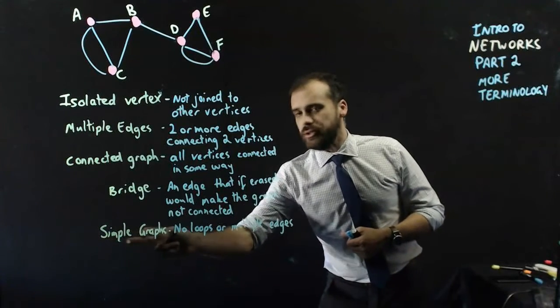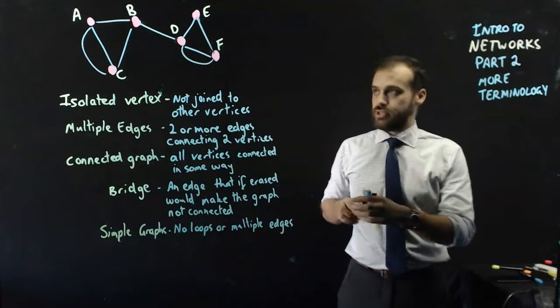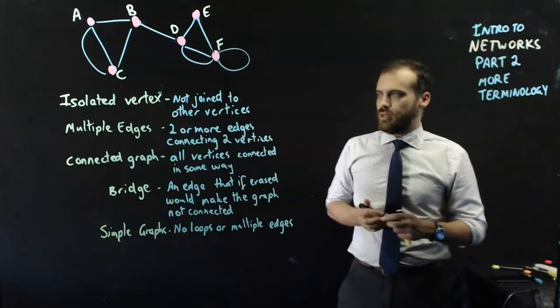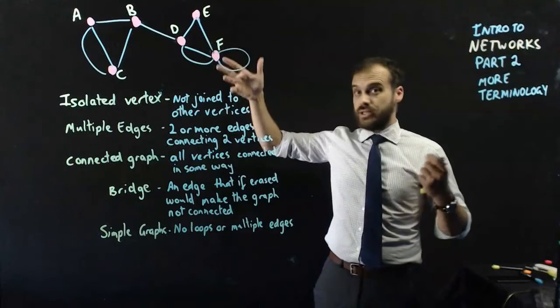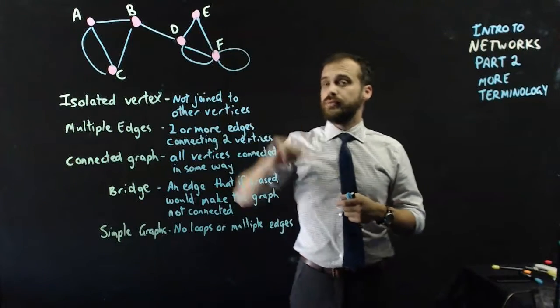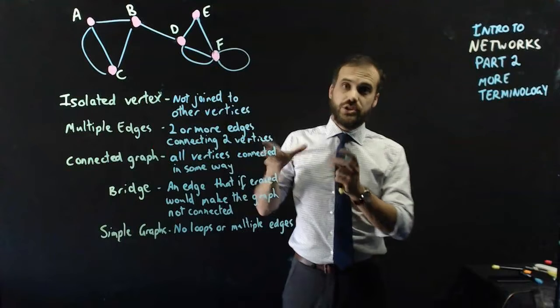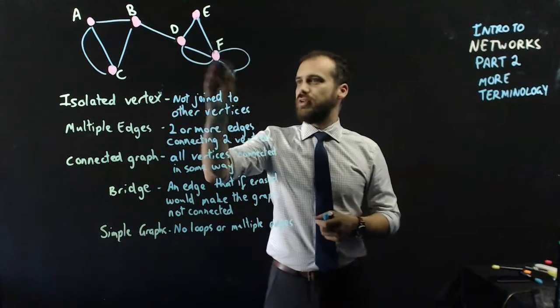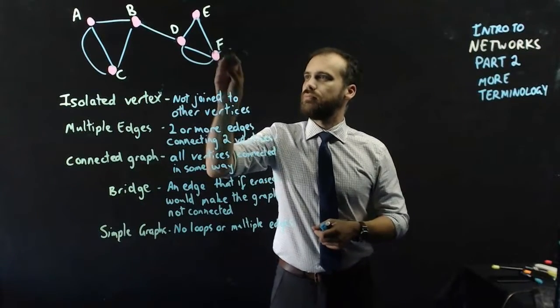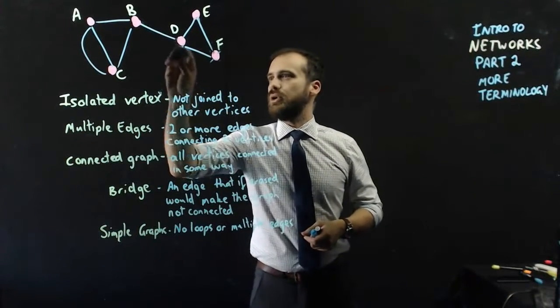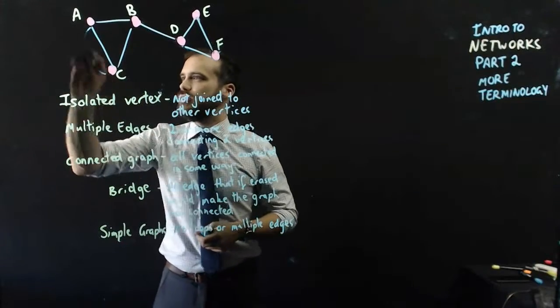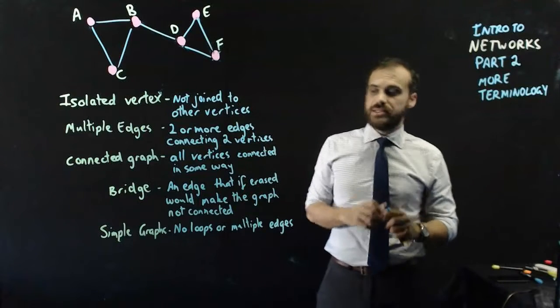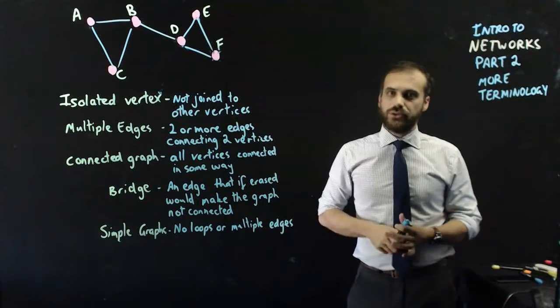That brings us to simple graphs. A simple graph has no loops and no multiple edges. You can see my graph, as it currently stands, has two problems. It has a loop and it has multiple edges between towns. So it is not a simple graph. Let's make it a simple graph by getting rid of our loop and by getting rid of multiple edges. It is now a simple graph. It has no loops, it has no multiple edges.